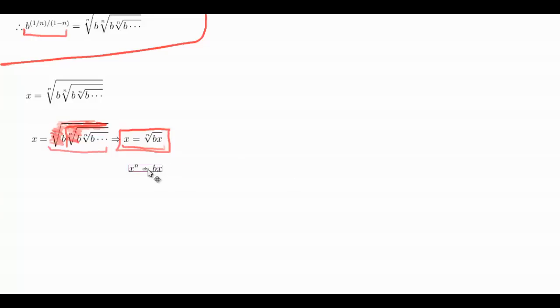Using this up here, we just take the nth power of each side to remove the radical, and we see that x to the nth power is equal to b times x.